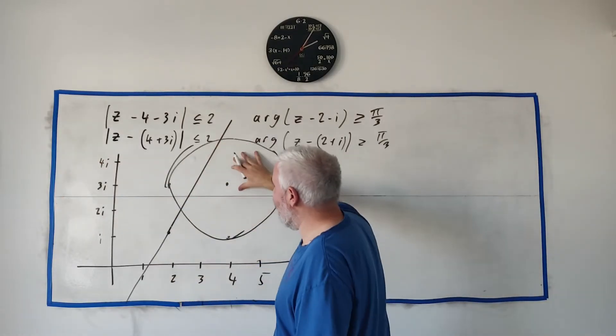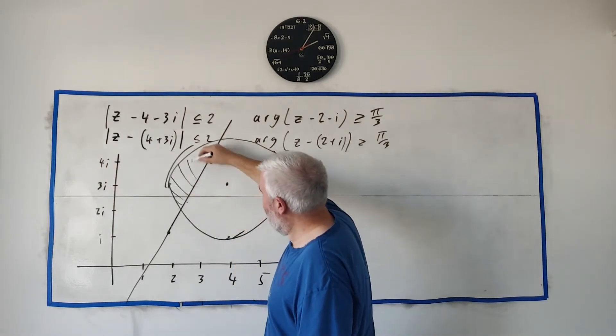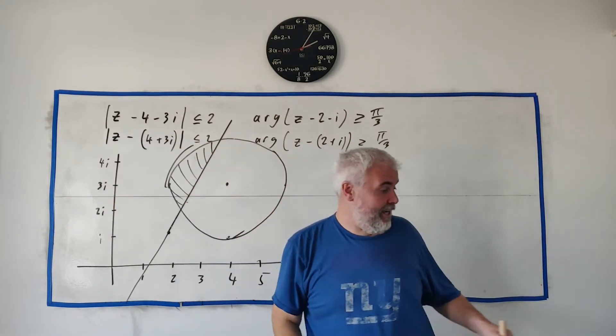So where did these two agree? In the circle and to the left of the line. They all agree in this area here. And that's what the examiner wants to see.